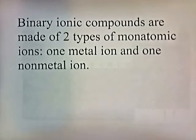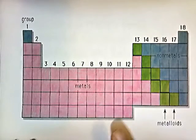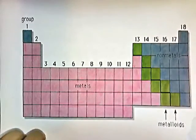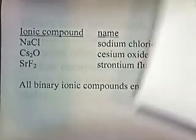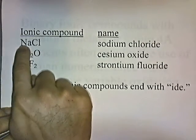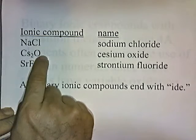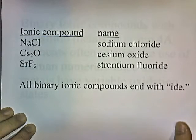Binary ionic compounds are made of two types of monatomic ions — one metal ion and one nonmetal ion. In naming a binary ionic compound, the positive ion, the metal, is named first, followed by the negative ion, the nonmetal. For example: sodium chloride, caesium oxide, strontium fluoride. All binary compounds end with -ide.